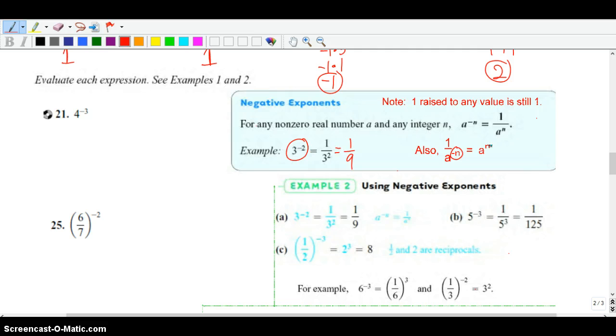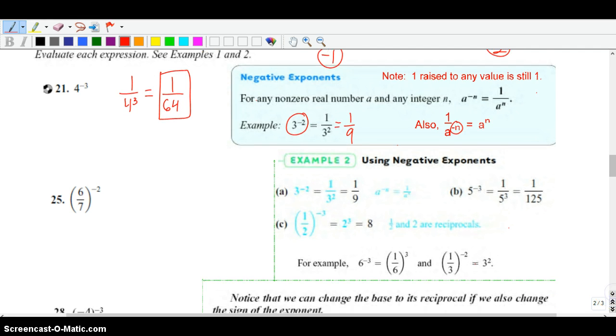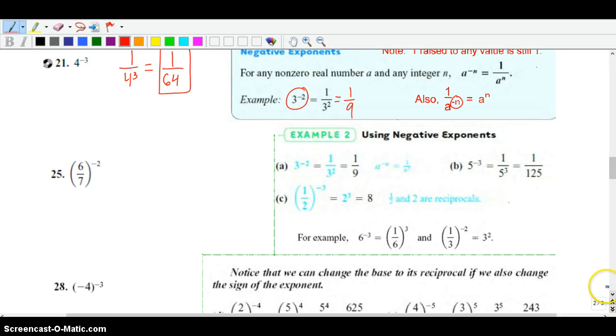On 21 here, this becomes 1 over 4 to the 3rd, and then go ahead, 4 to the 3rd is 64, so 1 over 64. And then 25 is basically pretty similar, and you can see some examples a little bit further down this page that look like 25. Basically, you're going to take the reciprocal, and so it becomes 7 over 6. Now our exponent power is a positive 2.